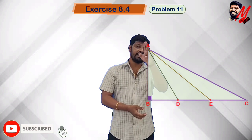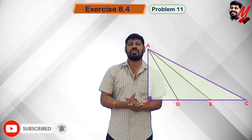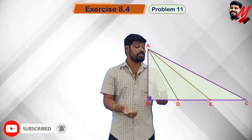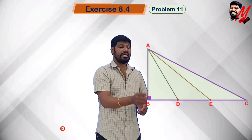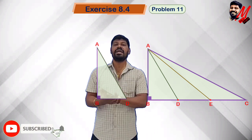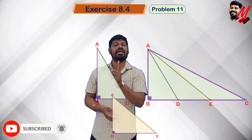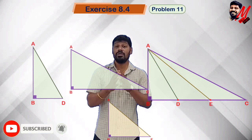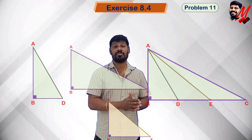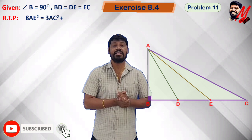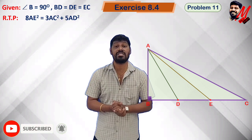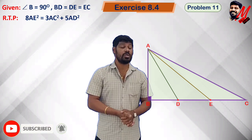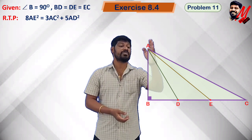Now, A, D and A, E are joined, giving different angles. These are the hypotenuses of three different right triangles: right triangle ABD with hypotenuse AD, right triangle ABE with hypotenuse AE, and right triangle ABC with hypotenuse AC. We have to prove the result: 8 times AE square is equal to 3 times AC square plus 5 times AD square.